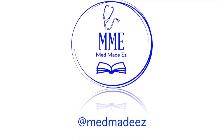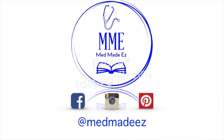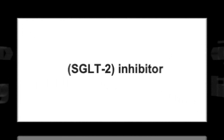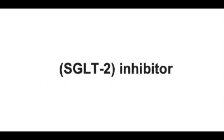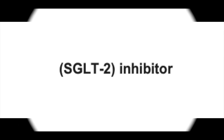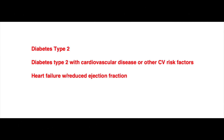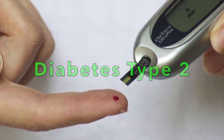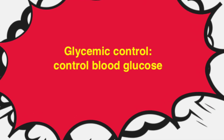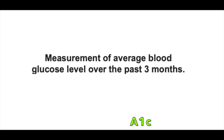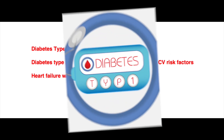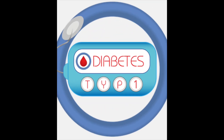Welcome back to MedMadeEasy everyone. Today we're going to talk about Farxiga. Farxiga is a medication in a class of medications called SGLT2 inhibitors. Here's a short list of the indications for this medication, but today I specifically want to focus on diabetes type 2. It helps to basically improve the glycemic control and lower the A1c. It is important to note that it is not recommended for diabetes type 1.